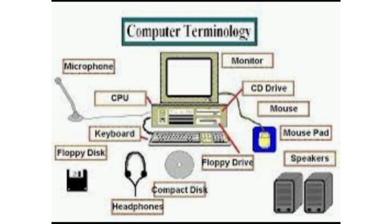Two more important computer components: RAM (Random Access Memory) and ROM (Read Only Memory). Input devices are those through which we give data to the computer — keyboard, mouse, scanner. Output devices produce results — for example, a printer, headphones, speakers, or a projector. RAM is temporary and volatile; ROM is non-volatile and permanent.